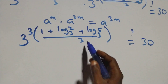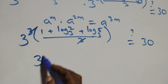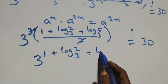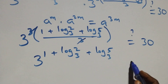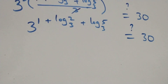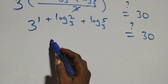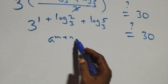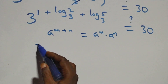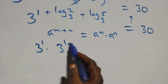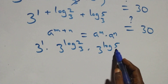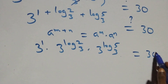The 3 in the numerator and denominator cancel each other. We have 3 raised to power (1 plus log₃2 plus log₃5) equals 30. Expanding this: 3 raised to power 1, times 3 raised to power log₃2, times 3 raised to power log₃5, equals 30.